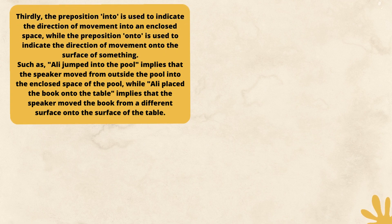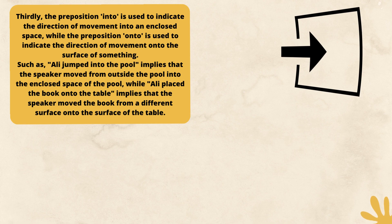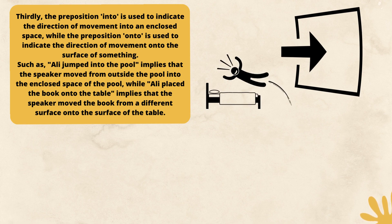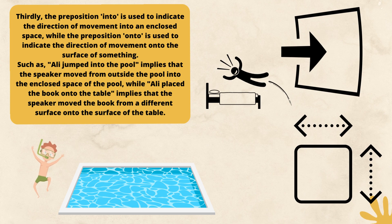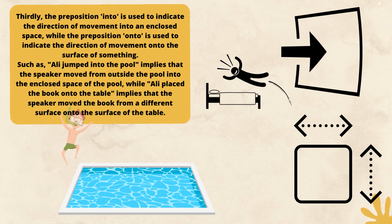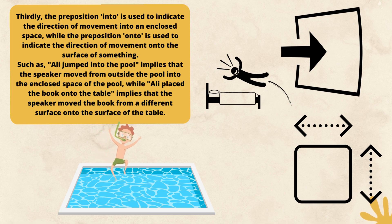Thirdly, the preposition 'into' is used to indicate the direction of movement into an enclosed space, while the preposition 'onto' is used to indicate the direction of movement onto the surface of something. Such as: Ollie jumped into the pool, which implies movement from outside the pool into the enclosed space of the pool, while Ollie placed the book onto the table implies that the book moved from a different surface onto the surface of the table.